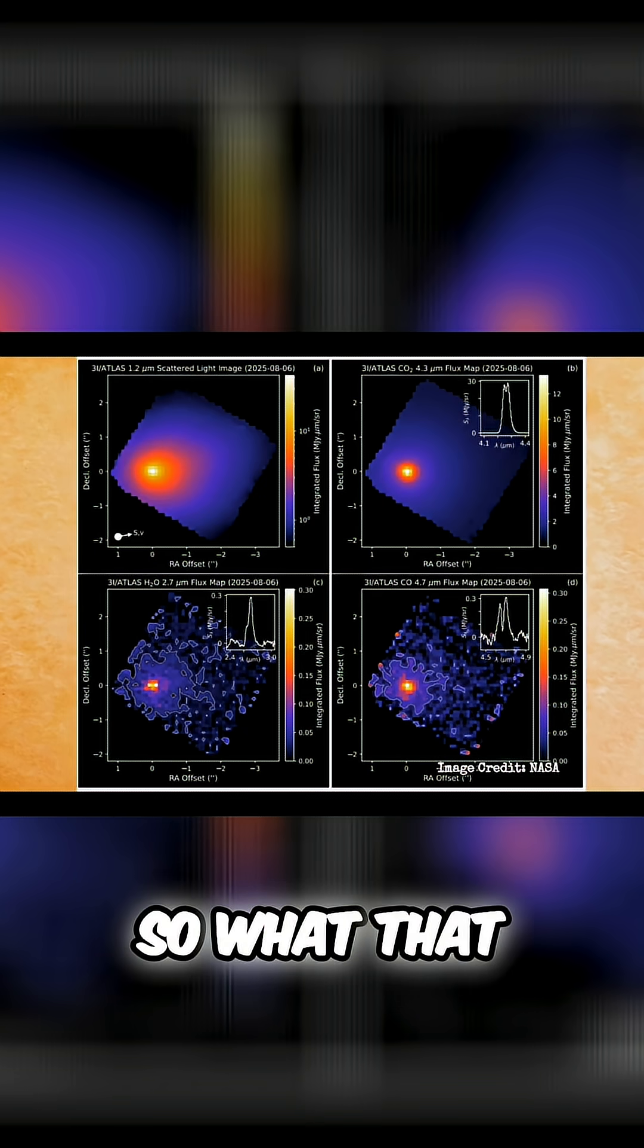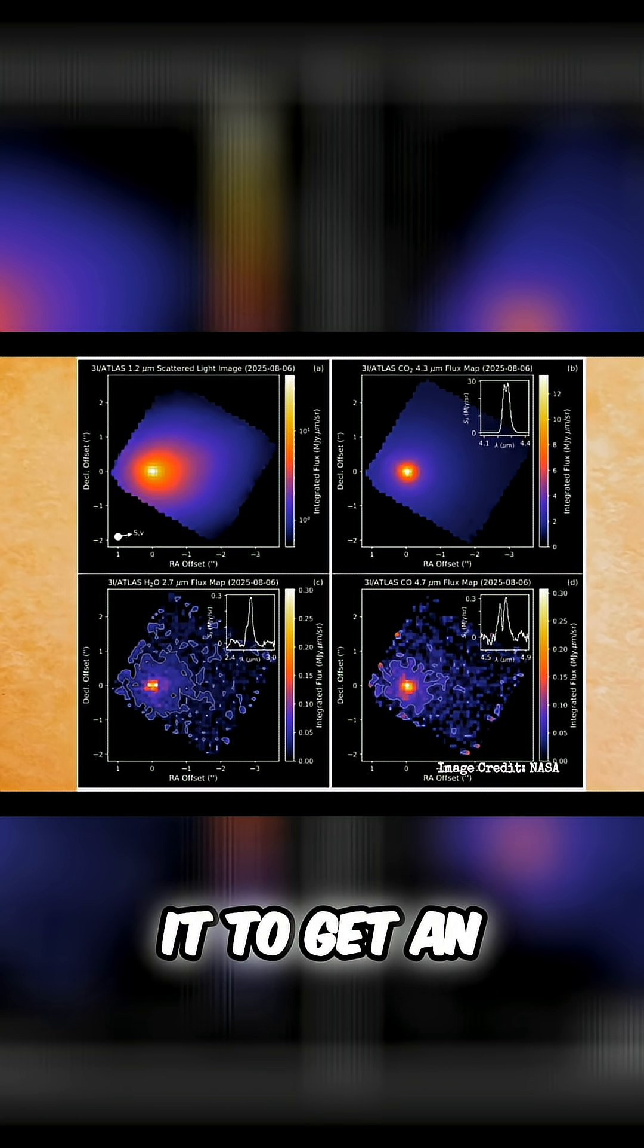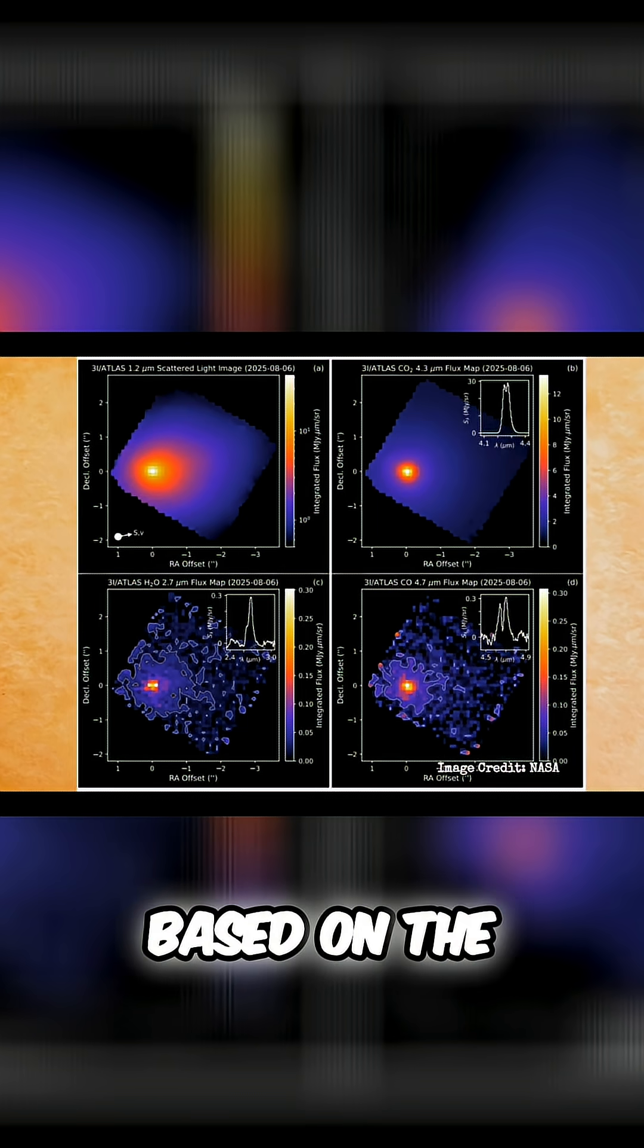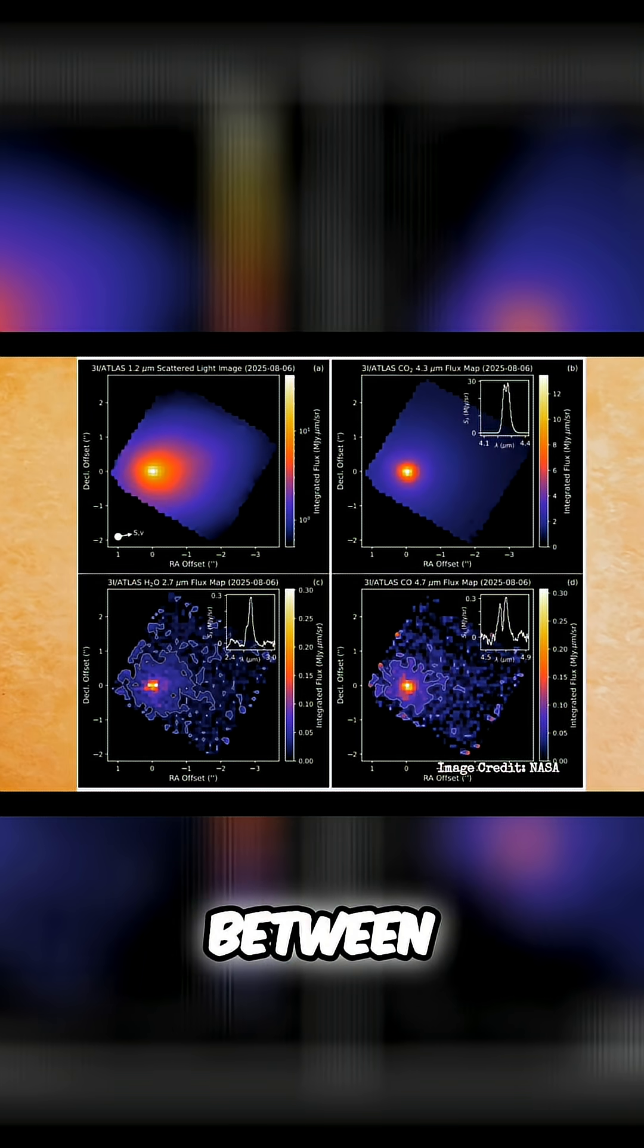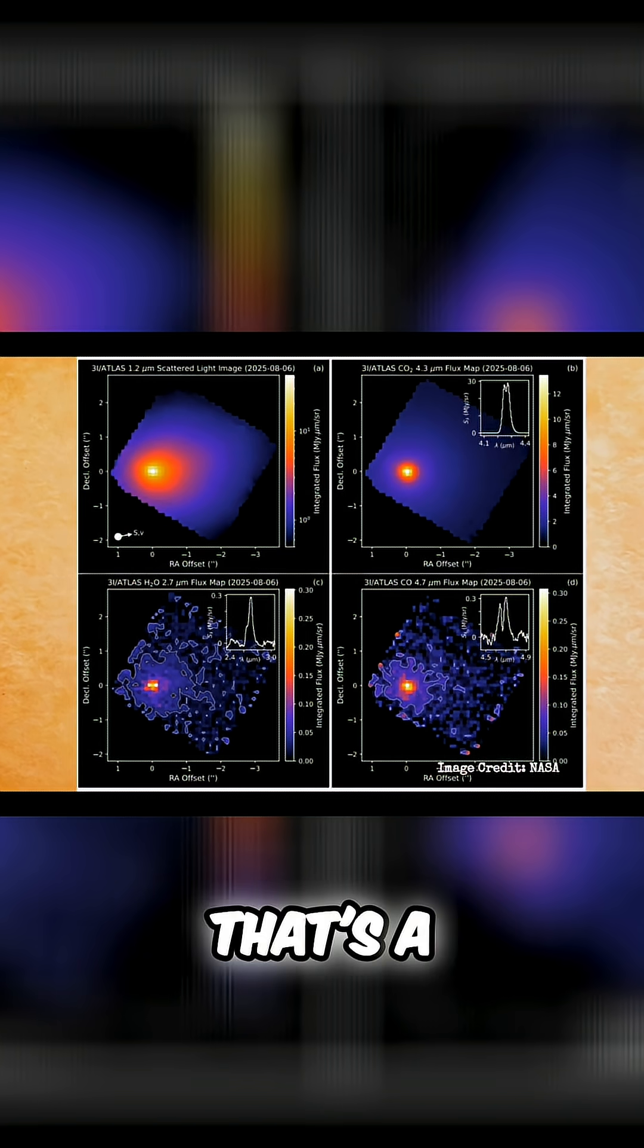So what that is showing - they directed Hubble at it to get an idea of how big it is. Based on the Hubble images, they said it's somewhere between 320 meters and 5.5 kilometers in diameter, which - that's a range.